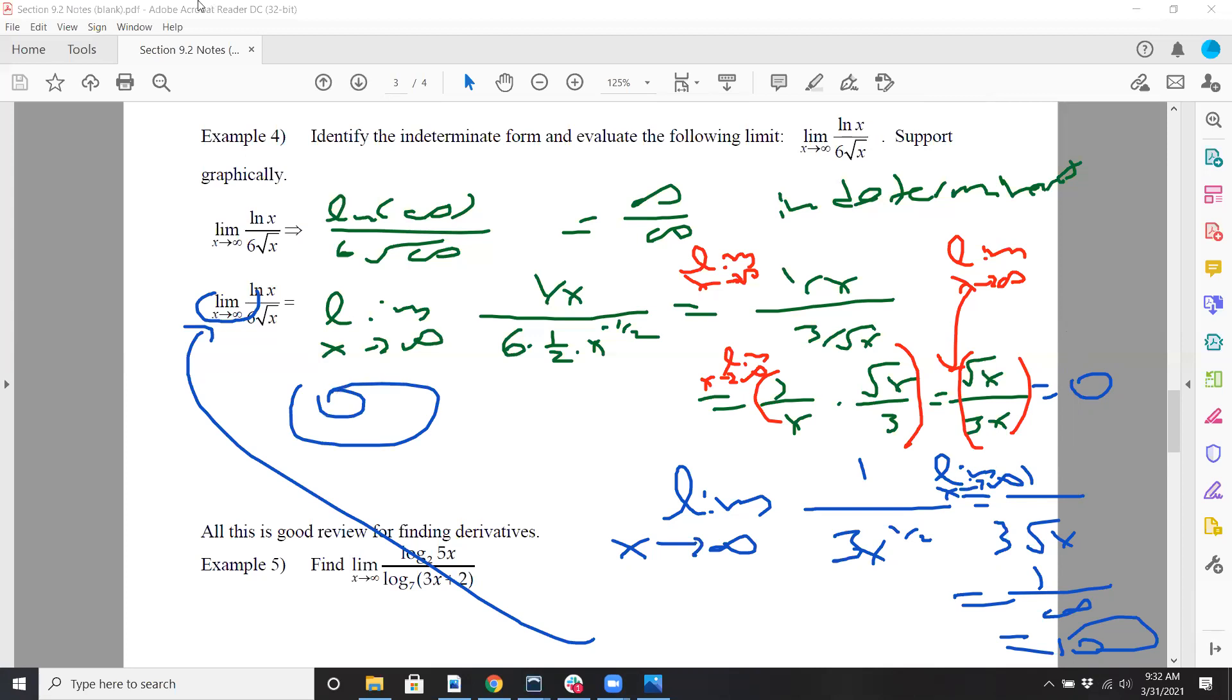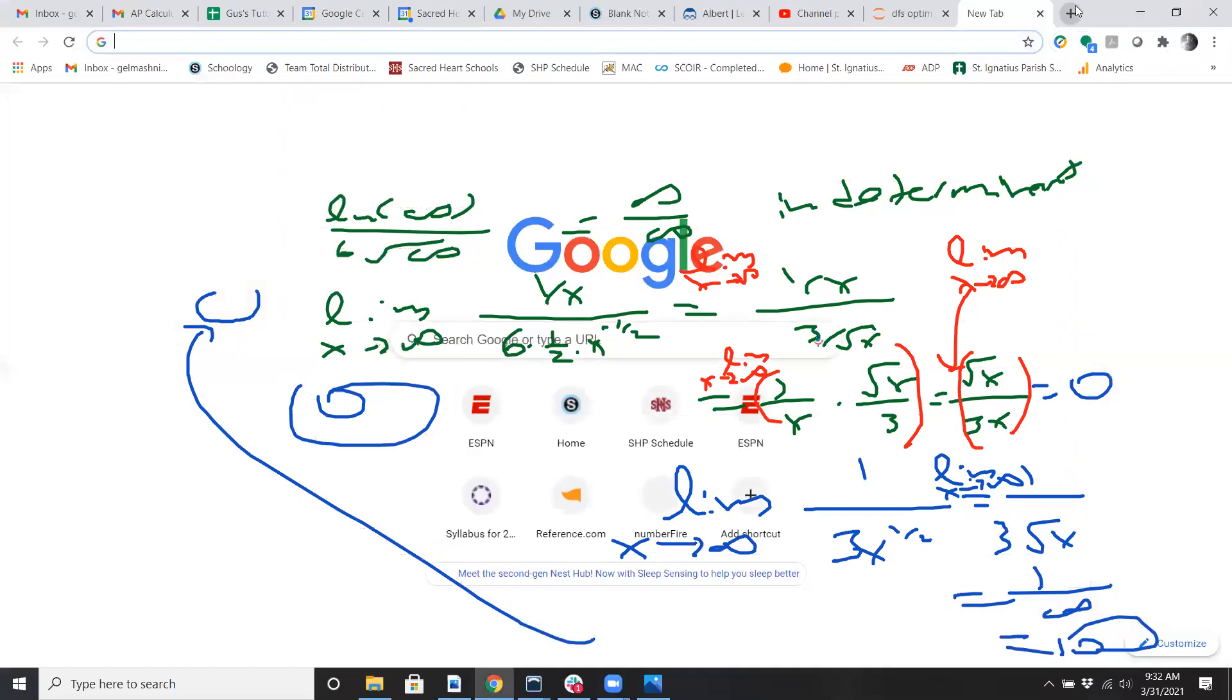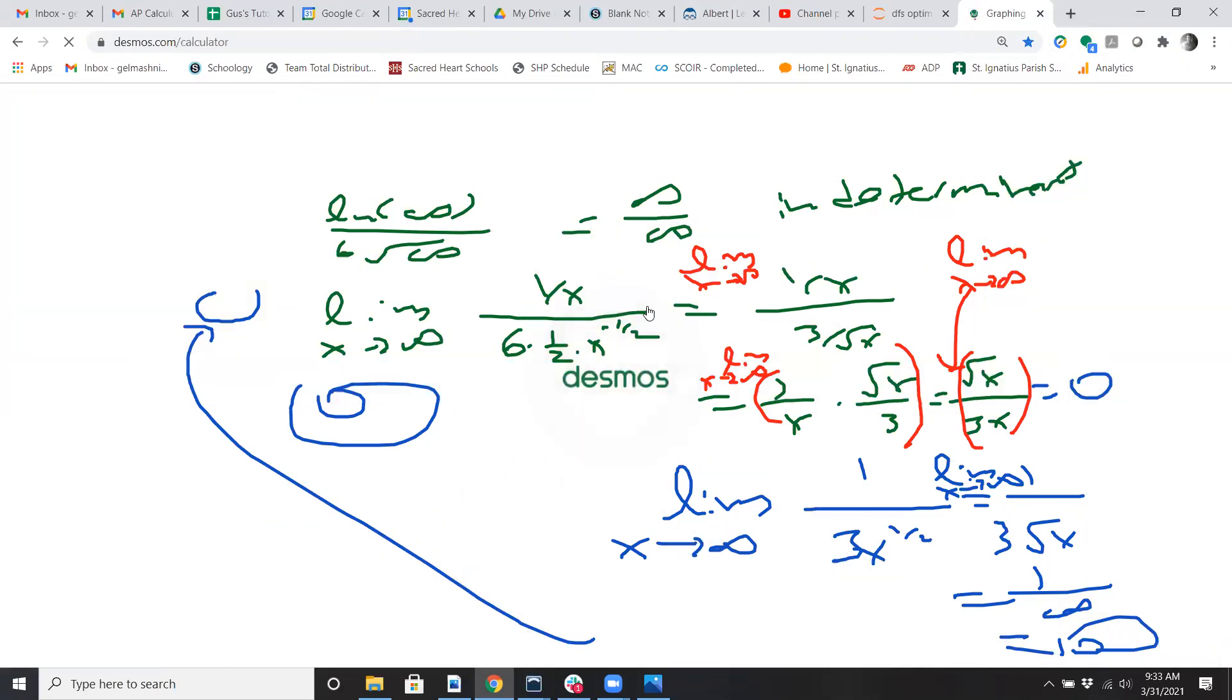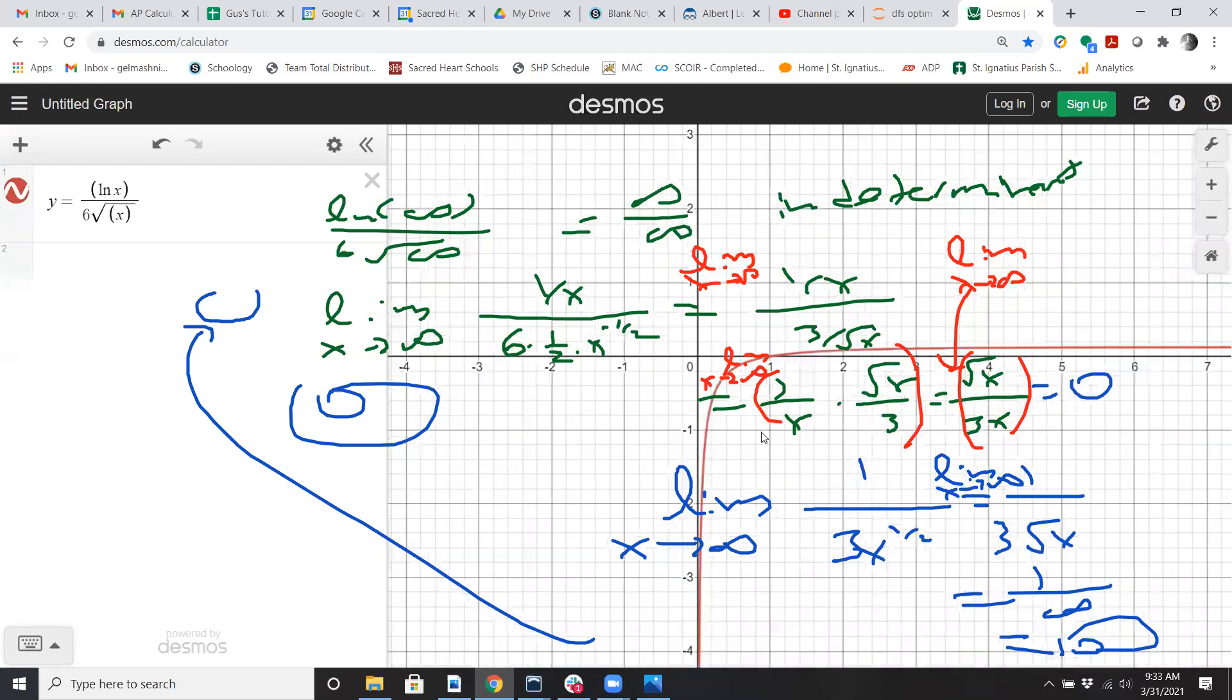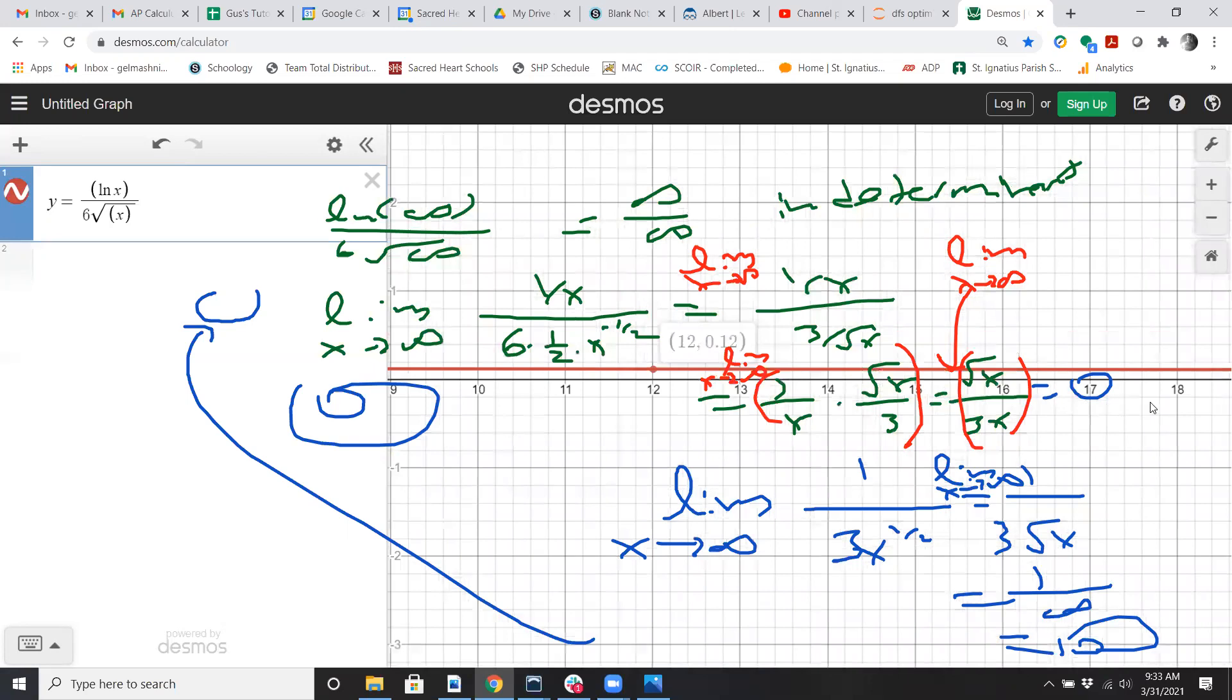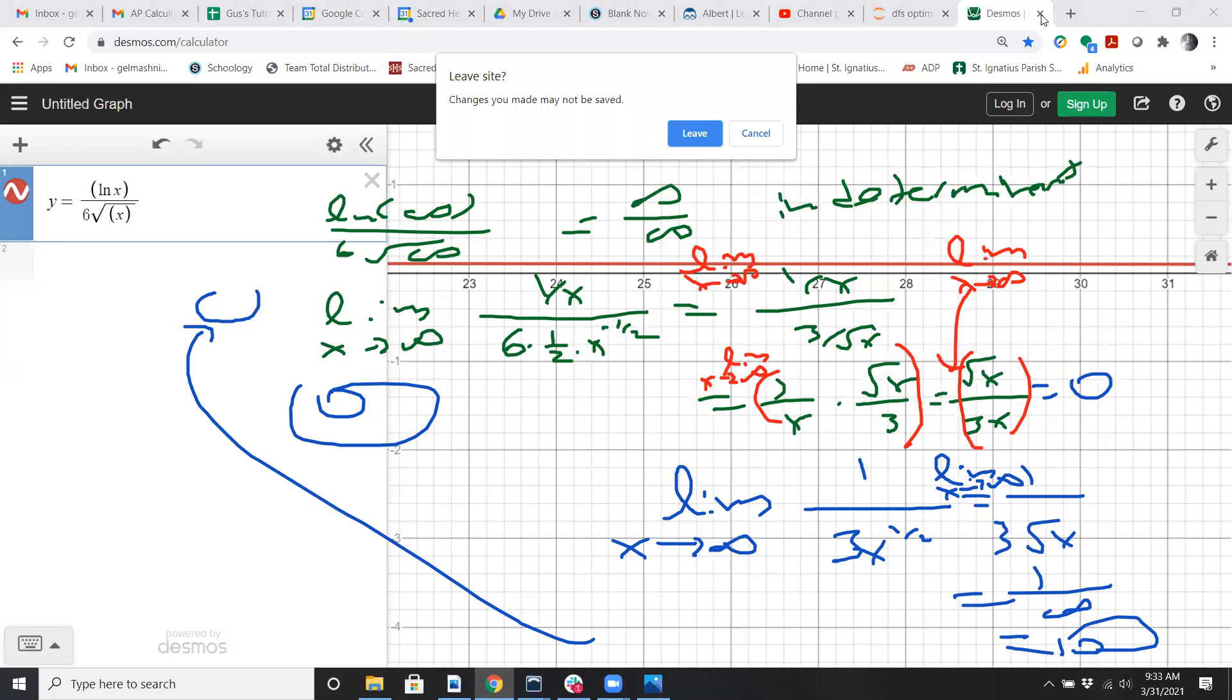And you could graph it if you were to actually go to Desmos. Let me go to Desmos right now. Y equals ln x divided by 6 square root x. And you could kind of see this graph is negative, crosses the x-axis at 1, then it's positive, and it starts coming back down again. If you actually were to trace, look at those y values. They do get lower in value as you keep passing through. So it is getting closer and closer to 0 eventually. So the limit does exist there.